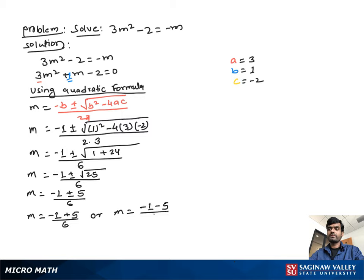Now solving each part: negative 1 plus 5 is positive 4 over 6, which equals 2 over 3. Negative 1 minus 5 is negative 6 over 6, which equals negative 1. So the final answer is m equal to 2/3 or m equal to negative 1.